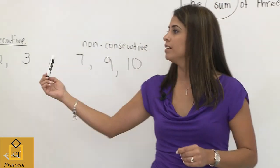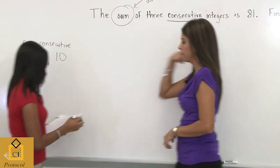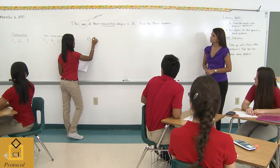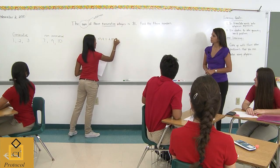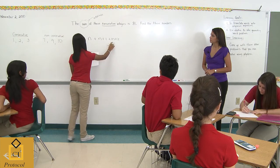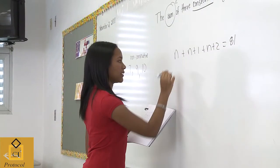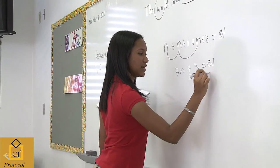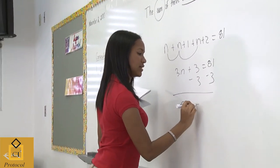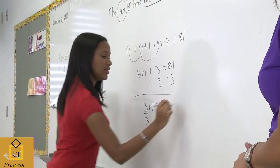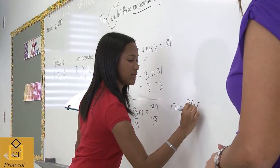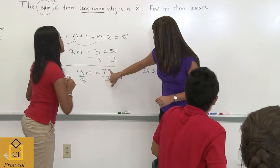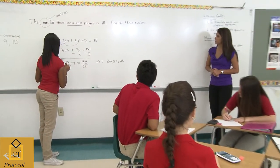Chris presents the algebraic approach: I got the answer because it's saying numbers, so I used a variable. It's n plus n plus 1 plus n plus 2, because you're finding three consecutive numbers, and that equals 81. I combine like terms: 3n plus 3 equals 81. Subtracting 3 gives 3n equals 78, then dividing by 3 gives n equals 26. So the three numbers are 26, 27, and 28. You got it right — excellent, great job.